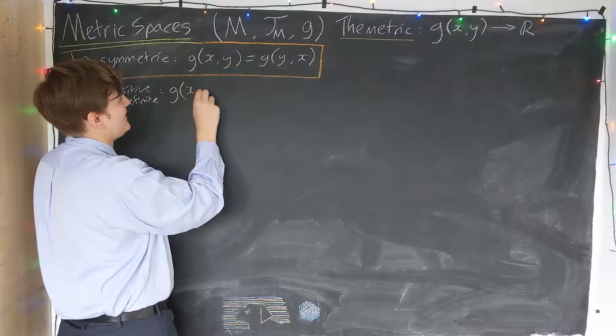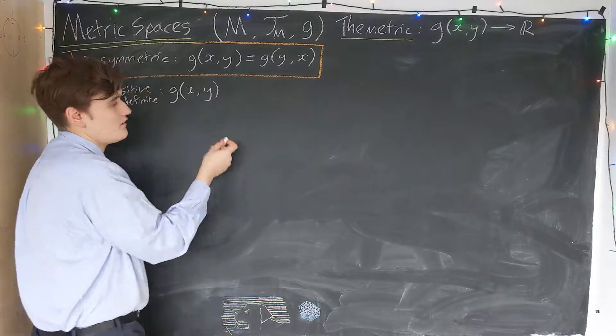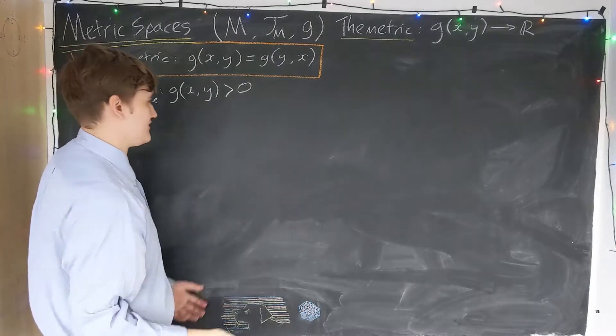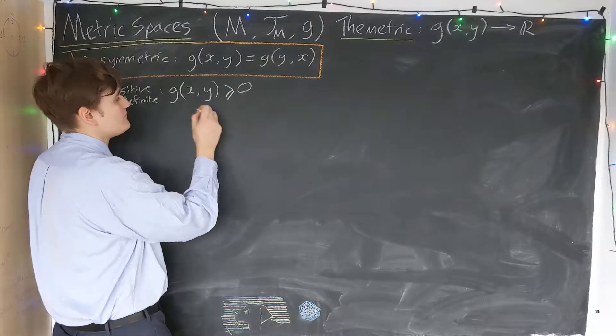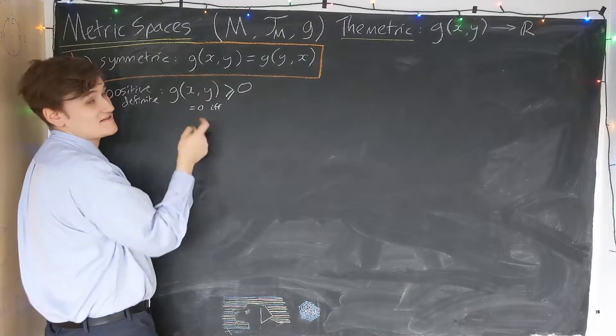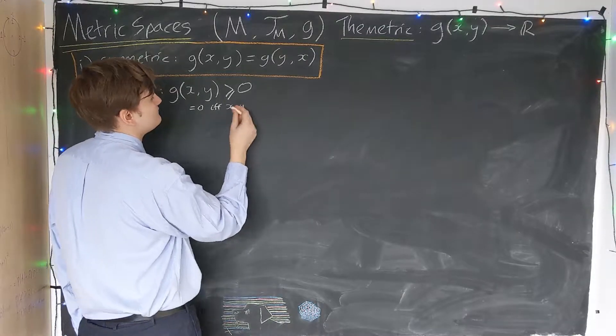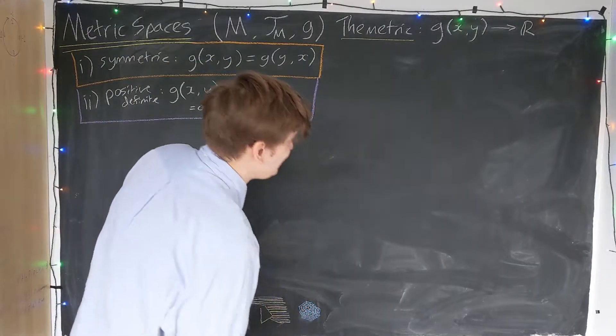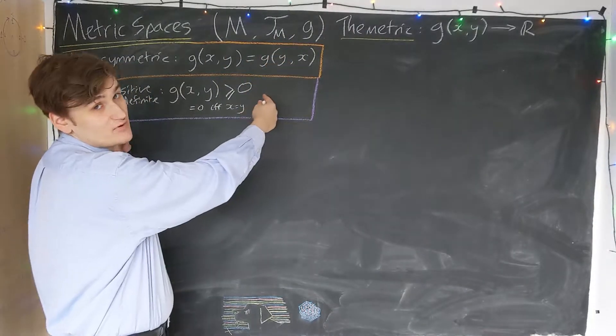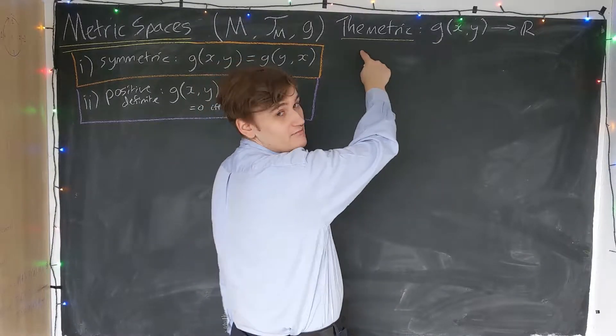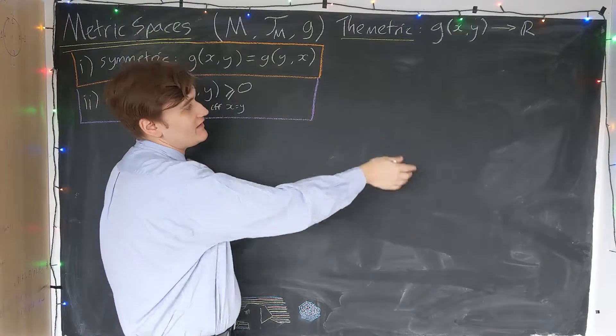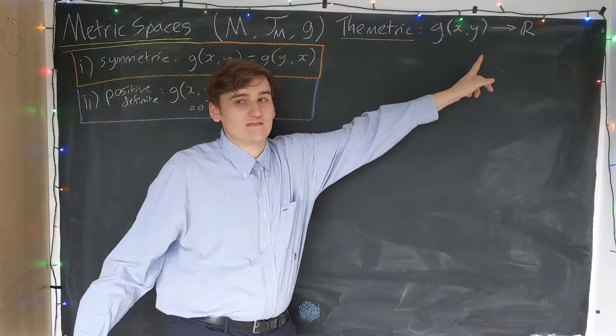Secondly, it has to be so-called positive definite. If we have two points x and y, this must always be greater than zero. The distance between them is positive. However, this can be equal to zero if and only if x and y are the same point. So any function which we can define on our topological space that satisfies these properties, we can interpret it as giving a metric to the space, and we interpret that as defining the distance between the two points.